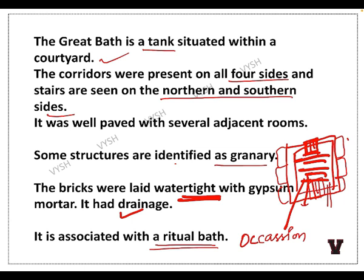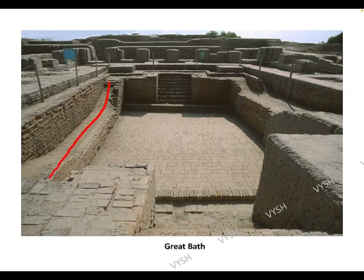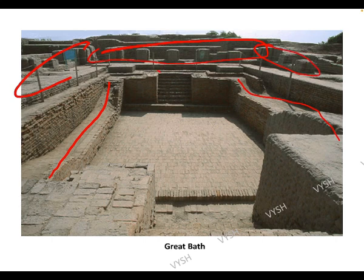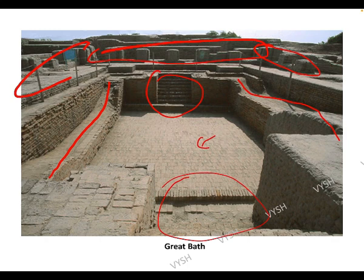You can see the Great Bath here — the corridor, the rooms on the sides, and the steps leading down. The bricks are so tightly packed that the joints are barely visible. It also had a drainage system to flush out used water.